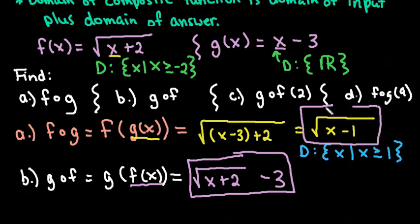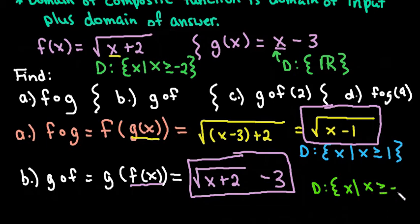As for the domain of this one, the domain is what we plugged in. The domain of my original function is x such that x has to be greater than or equal to negative 2, as well as the domain of the answer. The answer has the same domain as what we plugged in, so that would be the domain of our composite function.